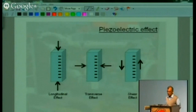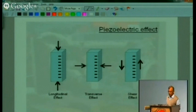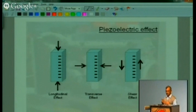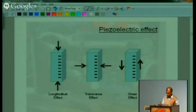The only transducer that can do all this is the piezoelectric transducer. When certain crystals are stressed and deformed, they produce charge — one face becomes positively charged and the other negatively charged. This charge is proportional to the stress applied on the crystal. You could use longitudinal, transverse, or shear effects to produce the stress. The charge appears on the opposite faces of the crystal and is calibrated to give stress and then pressure.